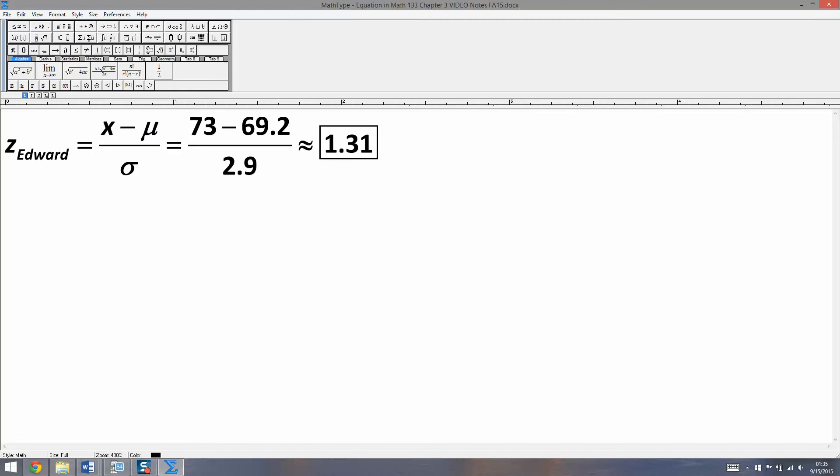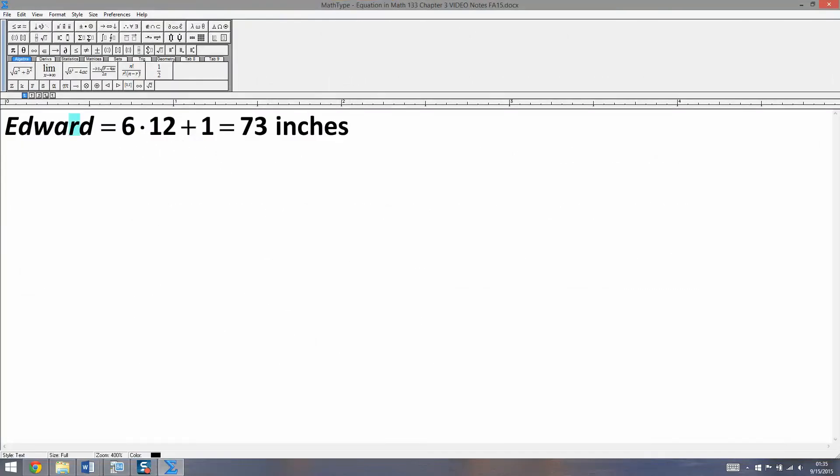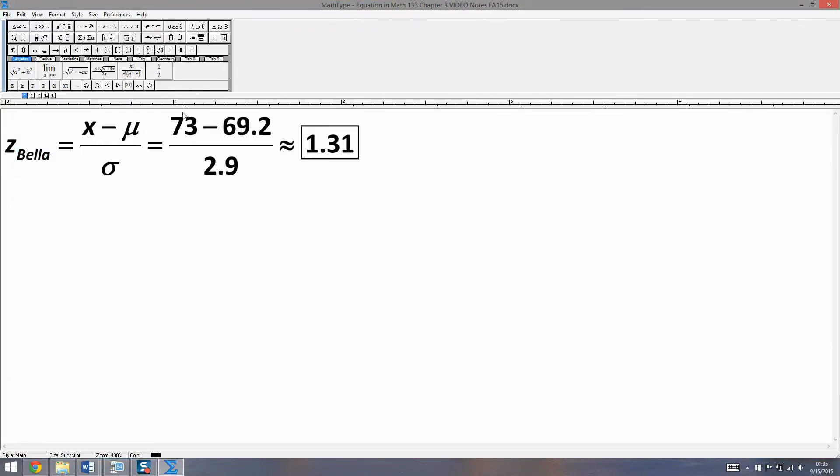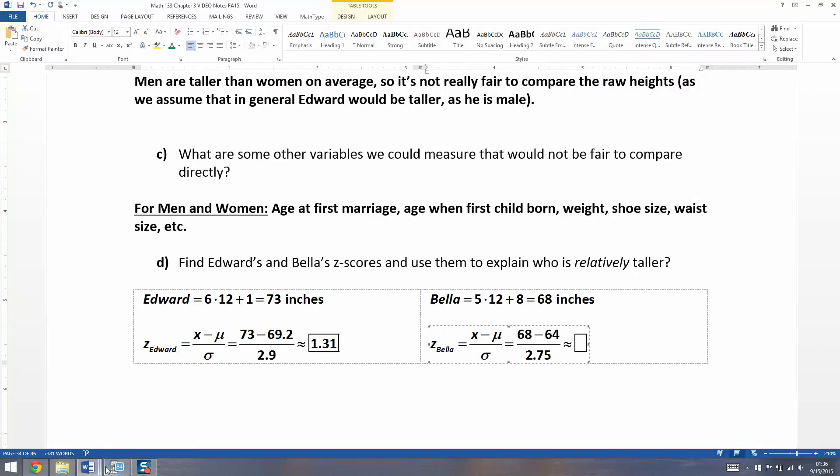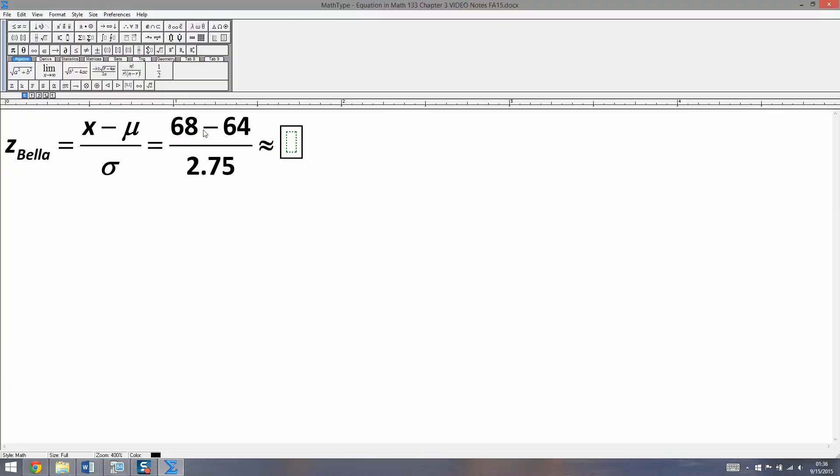He's tall, but not abnormally high, because he's not past two standard deviations. Now let's do the same thing for Bella. Bella is 5 foot 8, so she's 5 times 12 plus 8, which is 68 inches tall. To find the Z-score for Bella, we take 68 minus the average for women, which is 64, and divide it by the standard deviation for women, which is 2.75. Parentheses (68 - 64) divided by 2.75, and you get 1.45.